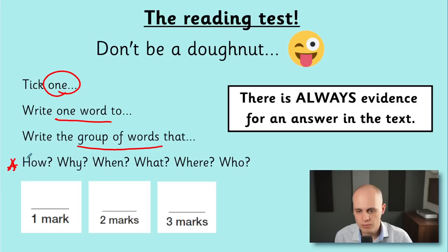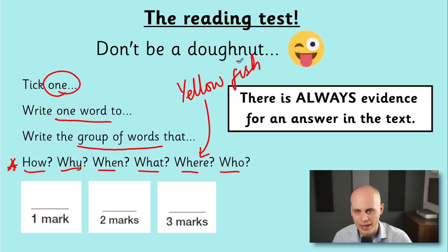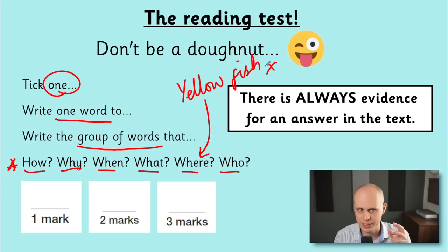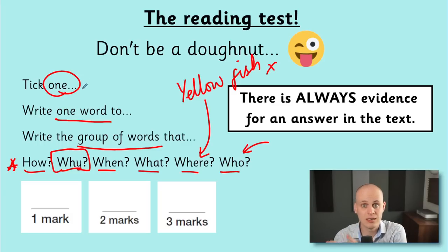This is the most important one for me — the questioning word. At the start of each question, typically it's going to start with one of these six words: how, why, when, what, where, and who. If you've got a where question and you're putting 'yellow fish' as your answer — that doesn't make any sense. It's a where question, so I already know that's wrong without even knowing the text. A who question is going to be asking for a name. You're going to see a lot of why questions because that leads to a lot of inference — why does a character do something, why did this happen, why did the narrator write this part — that's where it's asking you to dig a little deeper and look for evidence.